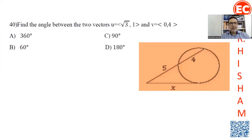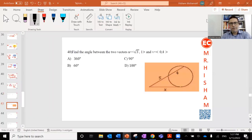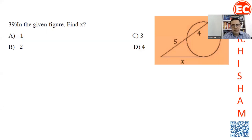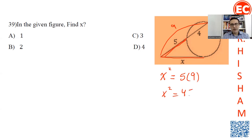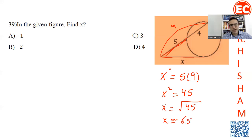Question 40: In the given figure, find the value of x. One side is a tangent and its length is 5, while the whole external length is 9. The tangent-secant relationship gives: x squared equals the small outside segment multiplied by the whole length. So x squared equals 5 times 9 equals 45, and x equals the square root of 45, which is approximately 6.7.